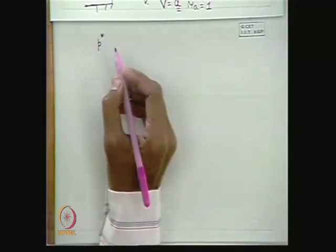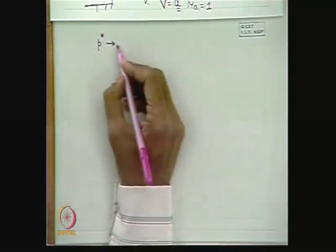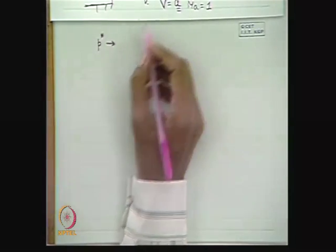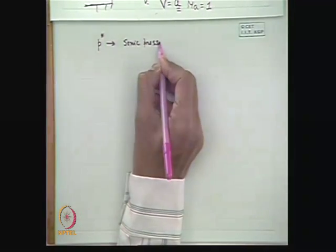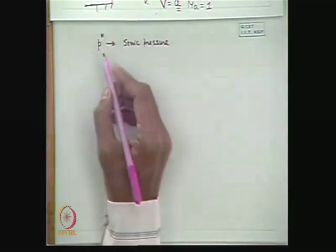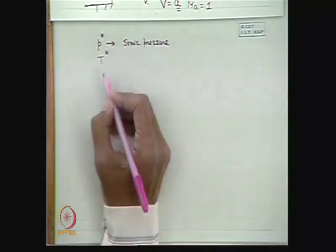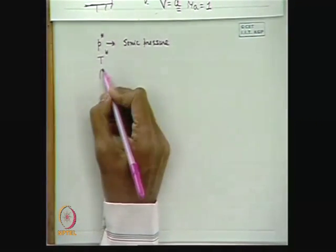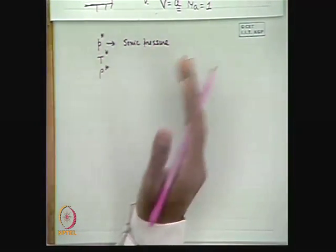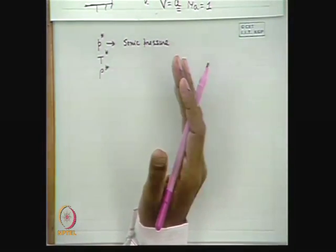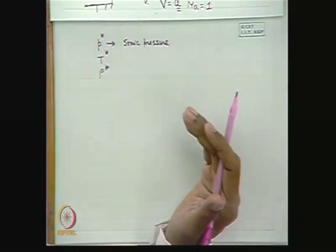For example, P* is the sonic pressure — the pressure at the section where sonic velocity is reached. Similarly, T* and ρ* are the sonic temperature and density. Just as 0 as a subscript conventionally represents stagnation properties, an asterisk superscript represents sonic properties — those at the section where the fluid velocity equals the speed of sound.